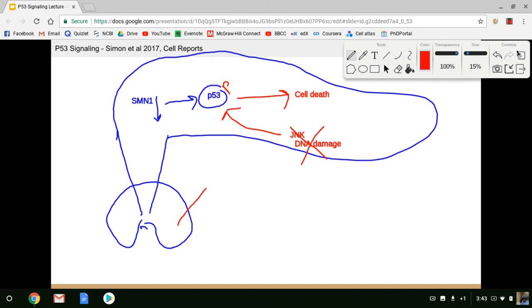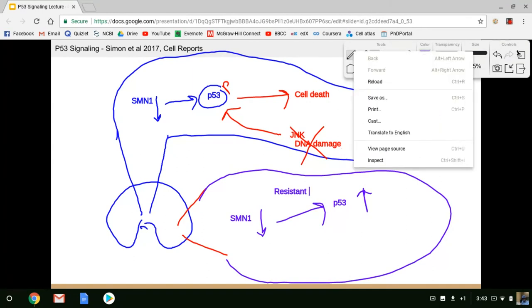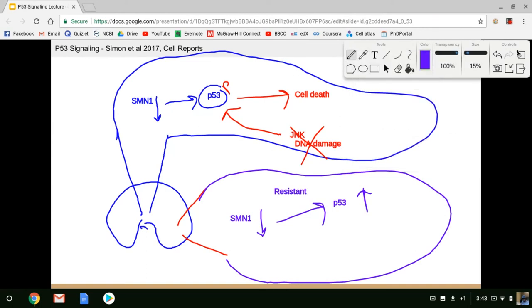This is all in contrast to what's happening in the lateral sections of the spinal column. In these lateral neurons, they still see a loss of SMN1. SMN1 is still decreased. And in the later stages of disease, they're still seeing p53 upregulation. However, it's not being phosphorylated. It's just p53. And these are the resistant neurons. So the critical event is the phosphorylation of p53 that distinguishes the vulnerable neurons from the resistant neurons that do not have phosphorylated p53.